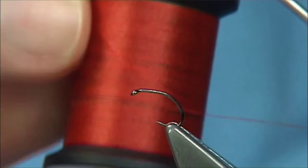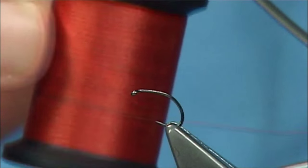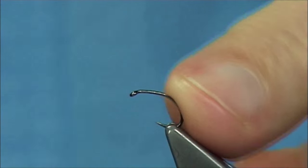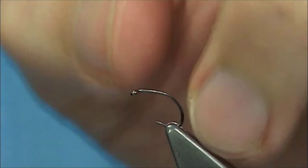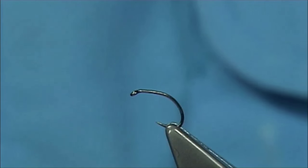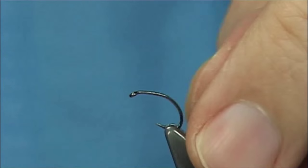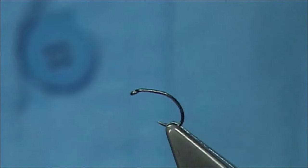I'm just going to use an orange Uni 8-0 thread. The hook I'm using is a size 16 which is the size I was asked to tie. It's basically a light buzzer hook or curved hook which is nice and strong and light as well.